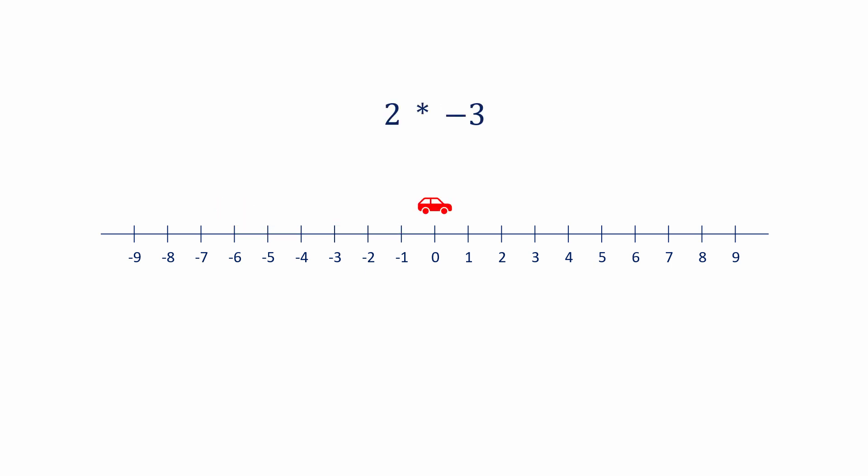2 times minus 3 can be thought of as moving two places forwards three times, but facing in the other direction. So the car moves forwards from its reversed perspective three times. Which gives the same result as minus 2 times 3.